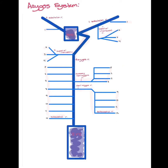Any venous blood moving posteriorly uses the azygous system. Both the right and left first intercostal vein drain directly into the subclavian vein and into the SVC.